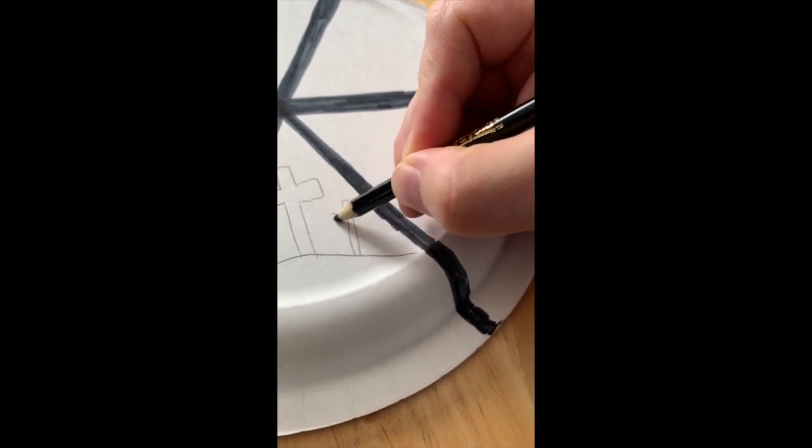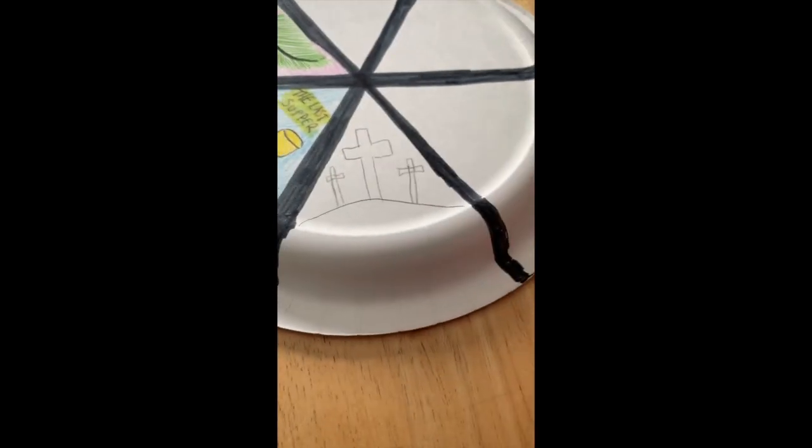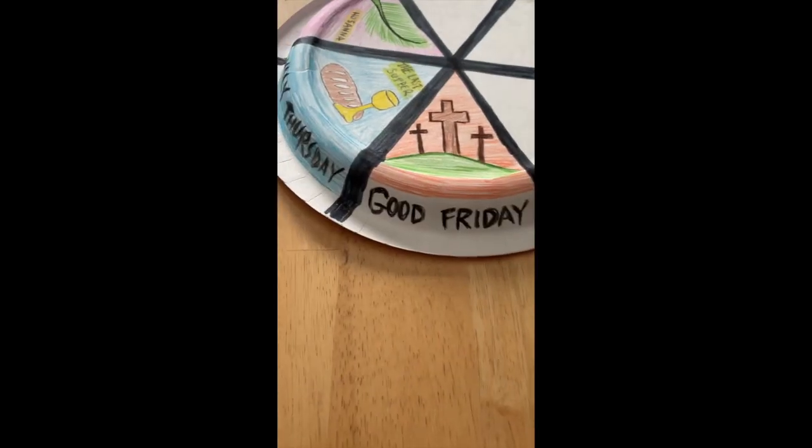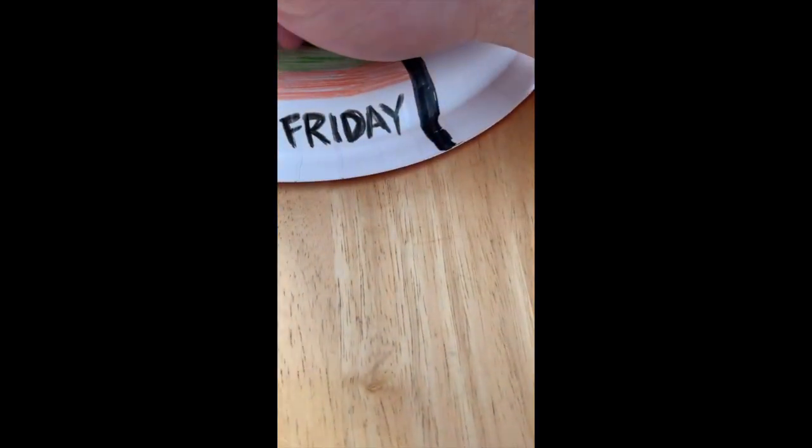As you finish up your drawing of the crosses, you can always add some color. And then on this side of the plate write Good Friday, and then color it all in.